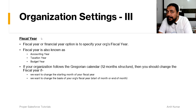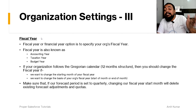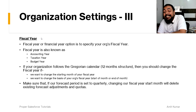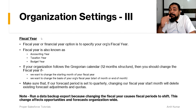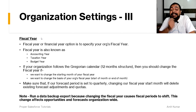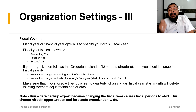This is done with the standard fiscal year itself. Make sure that if our forecast period is set to quarterly, changing our fiscal year start month will delete existing forecast adjustments and quotas.